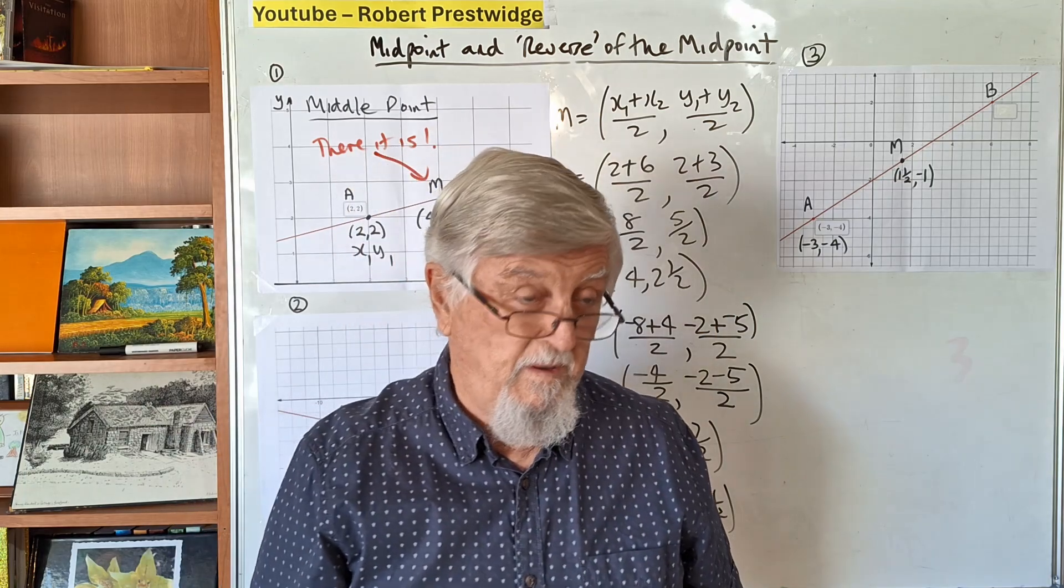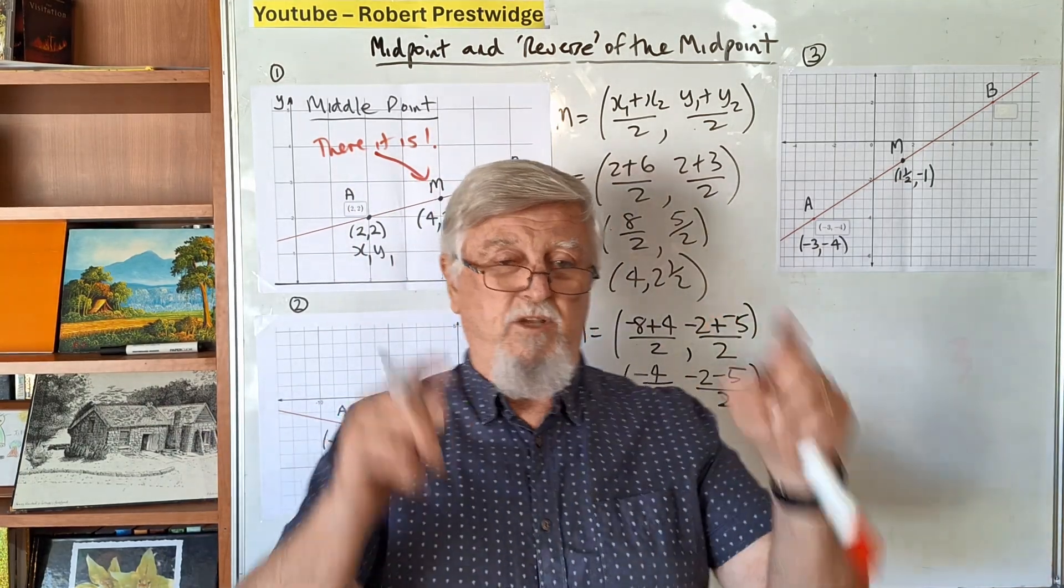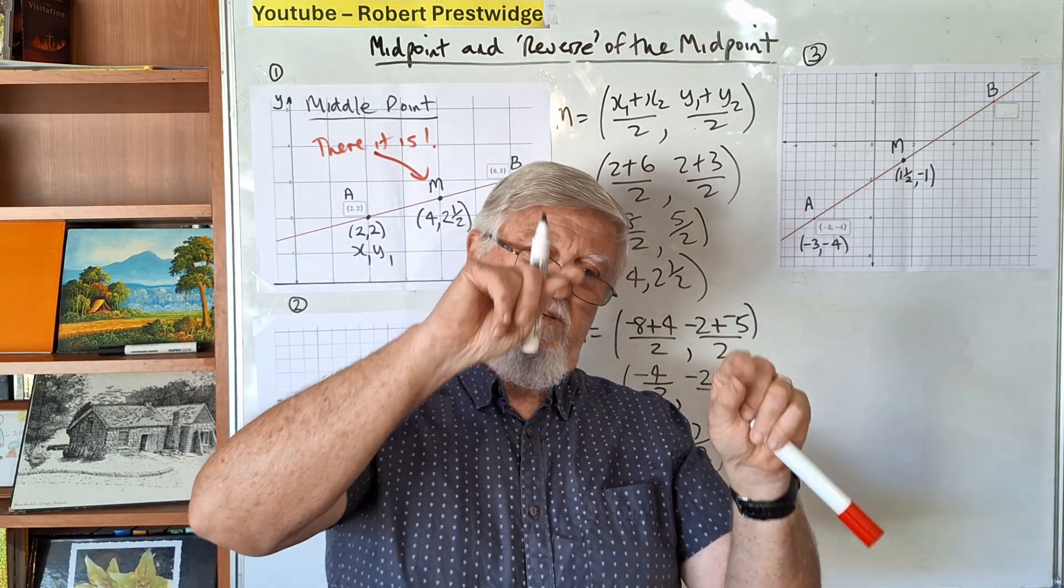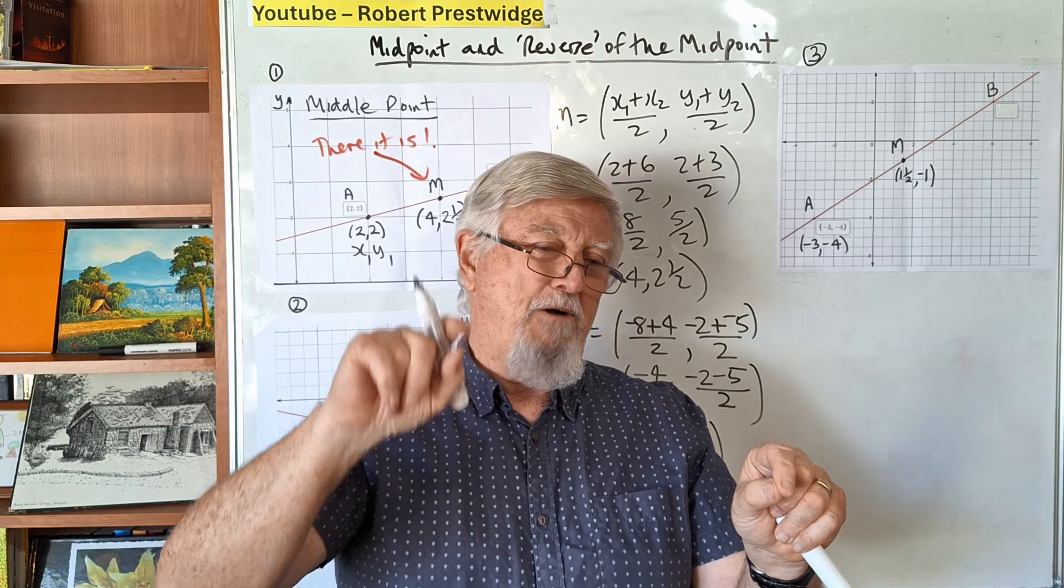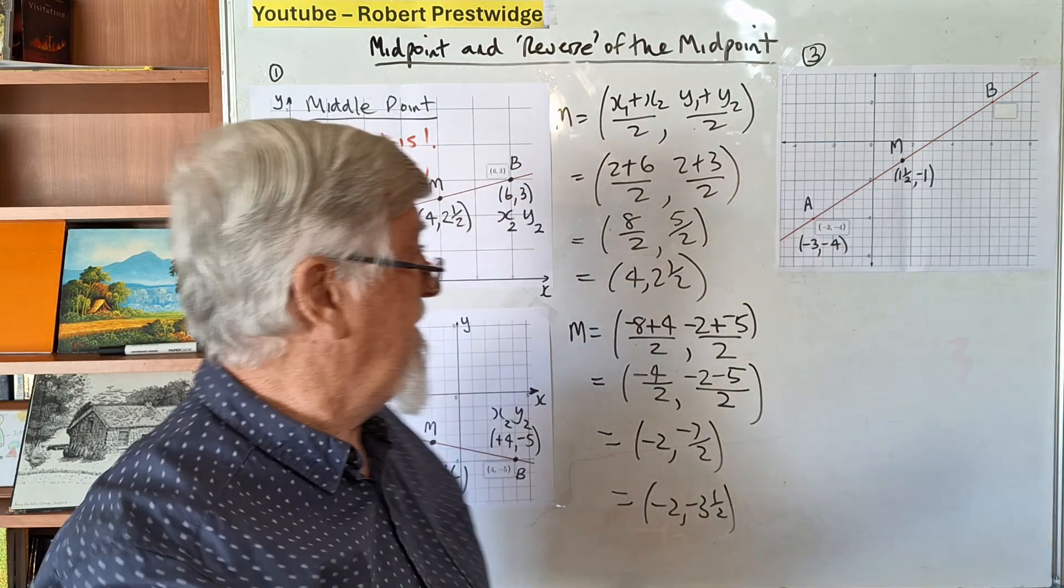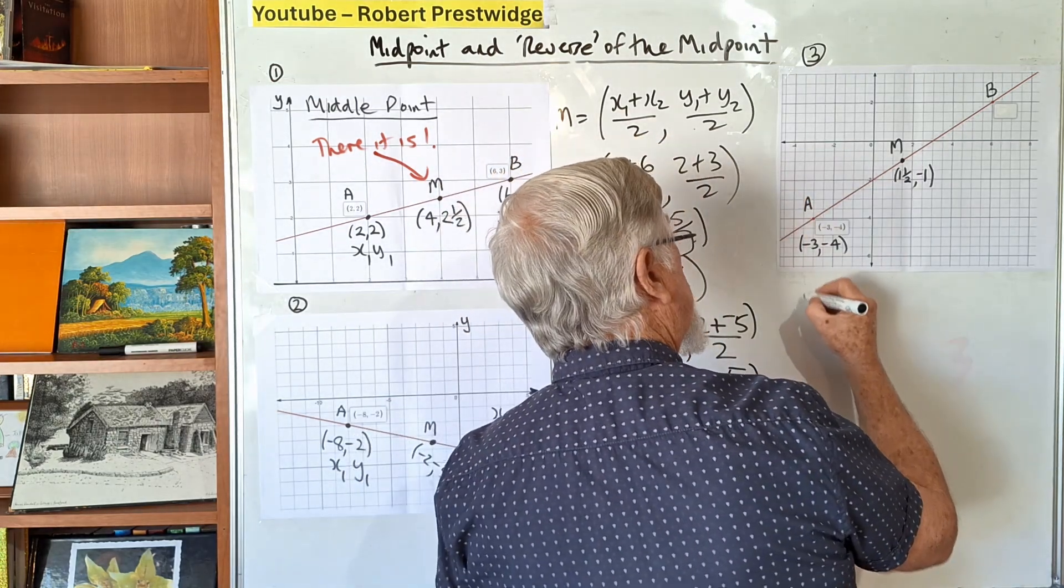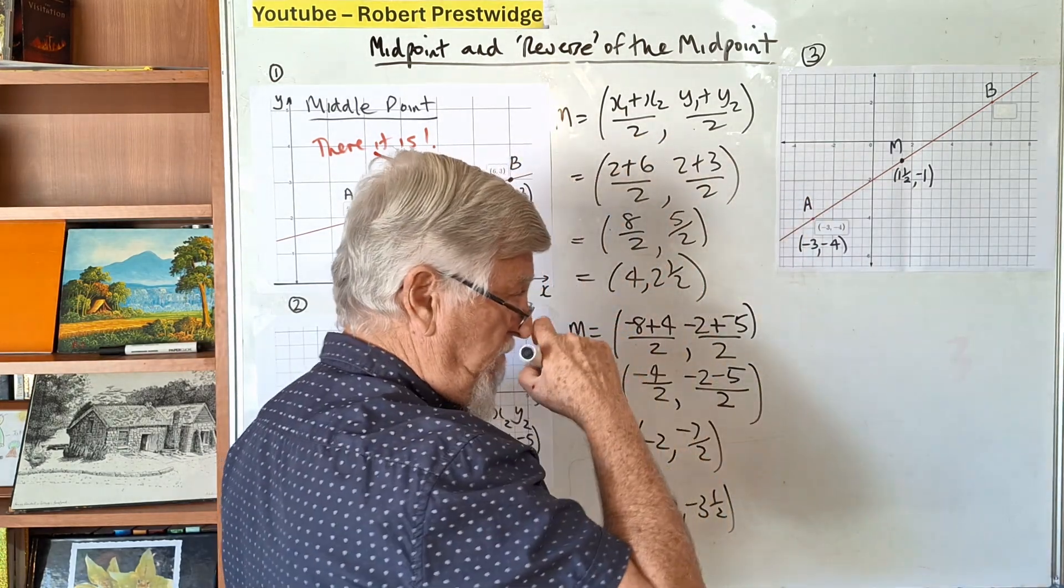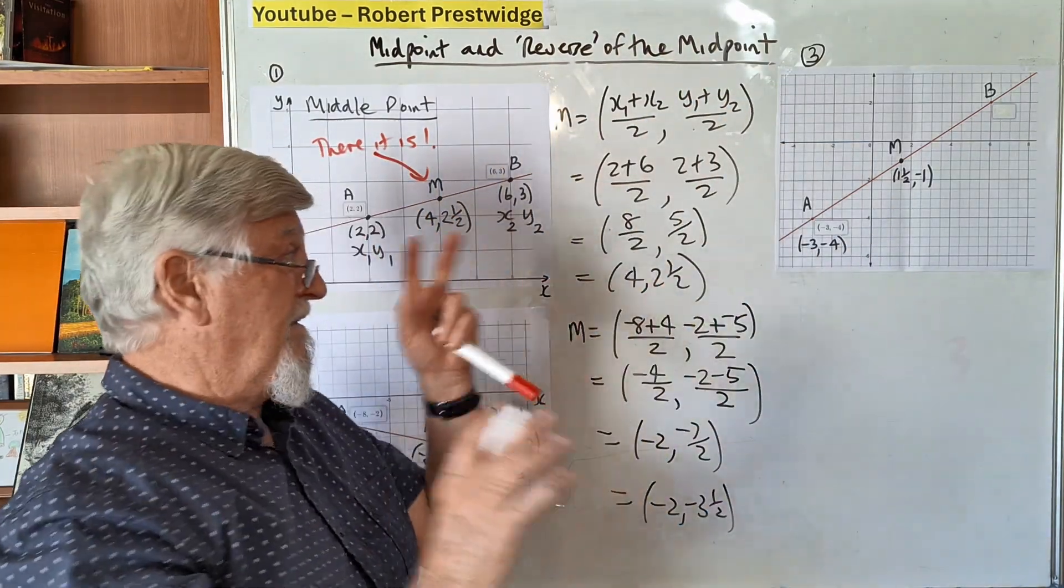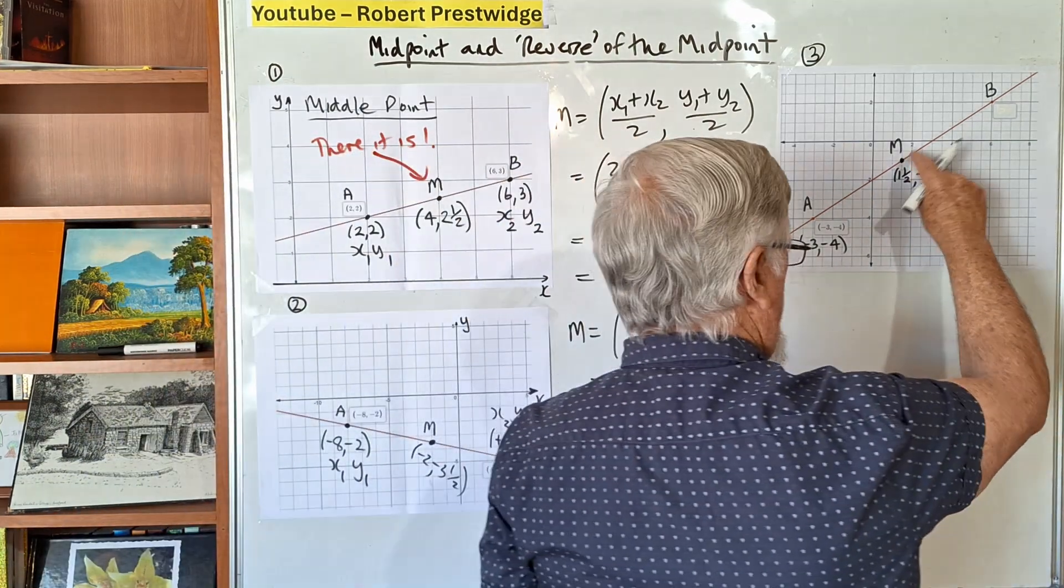Now the tricky one that mucks people up. You walk into assessment and you teach them the two endpoints to find the middle point. Then instead, you say here's the middle point, find the endpoint. Let's say you want to do it properly.